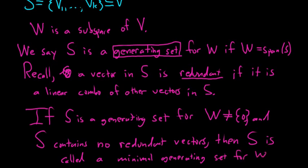So a minimal generating set for W is a set which spans W and has no redundant vectors. So you can't have a vector in S that's a linear combination of others. We haven't talked about something called linear independence yet, or basis, so I can't use those words yet. But it's pretty much the same thing.